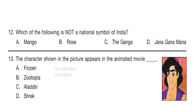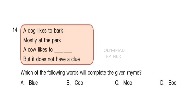Question 13: The character shown in the picture appears in the animated movie... Answer is option C — Aladdin. Question 14: A dog likes to bark, mostly at the park. A cow likes to... but it does not have a clue. Which of the following words will complete the given rhyme? Answer is option C — Moo.